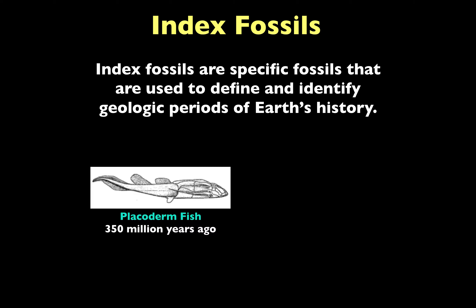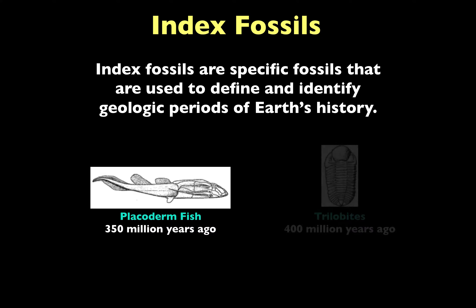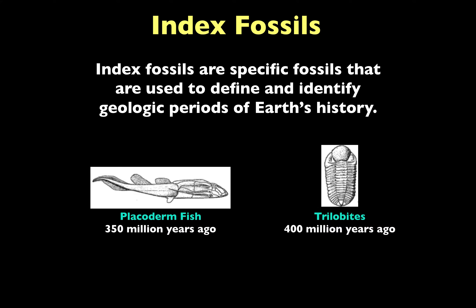Here's an example of an index fossil. This specific fossil is called Bothriolepis, but its category is a Placoderm fish. This organism lived about 350 million years ago. Another example of an index fossil is a trilobite — specifically this fossil is called Phacops, and it lived 400 million years ago.